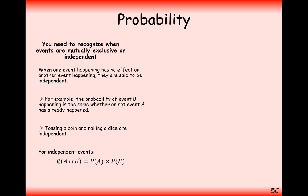For two independent events, the probability of A and B happening together can be calculated as the probability of A times the probability of B. If one probability does affect the other, this rule won't apply and you won't get the same answers. For example, the probability of a head and rolling a six would be one-half times one-sixth.